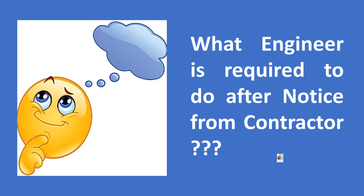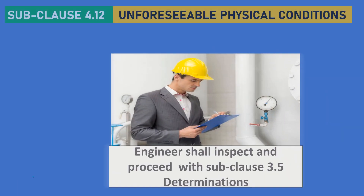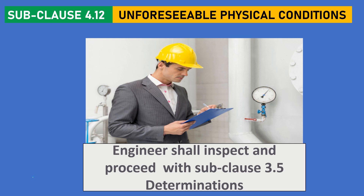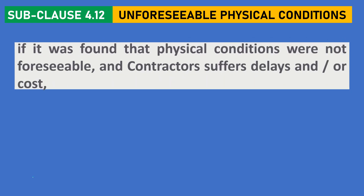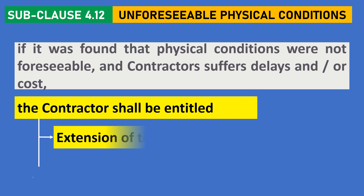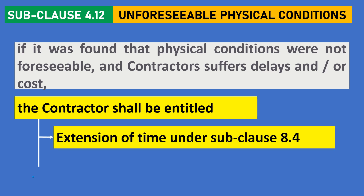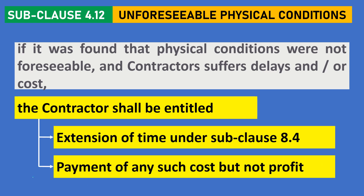After necessary notification from the contractor, what action is required to be taken by the engineer? First of all, the engineer shall inspect and proceed with the subclause 3.5 determination. And if it is found that the physical conditions were not foreseeable and the contractor suffers delays and/or cost, the contractor shall be entitled to an extension of time and payment of any such cost, but not profit.